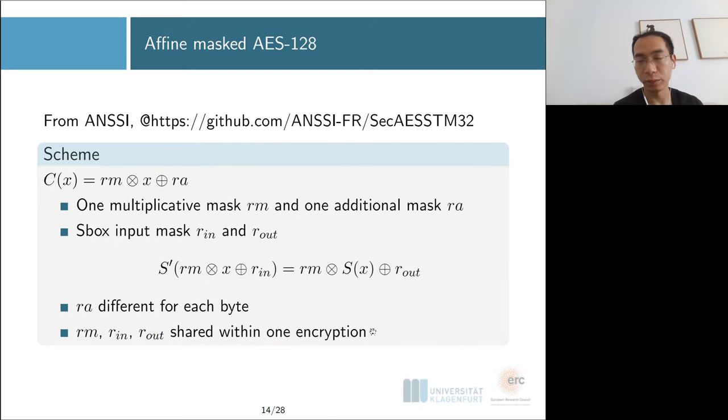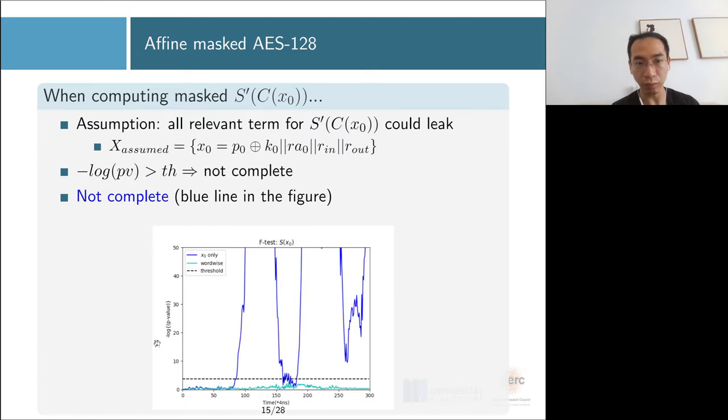The target implementation we're going to test is the affine masking from NSC. Affine masking will encode any unmasked state X into this form with a multiplicative mask rm and additive mask ra. The S-box will be pre-computed and stored in a table. The additive masks will be different from byte to byte, but the multiplicative mask, input and output masks are shared within one encryption.